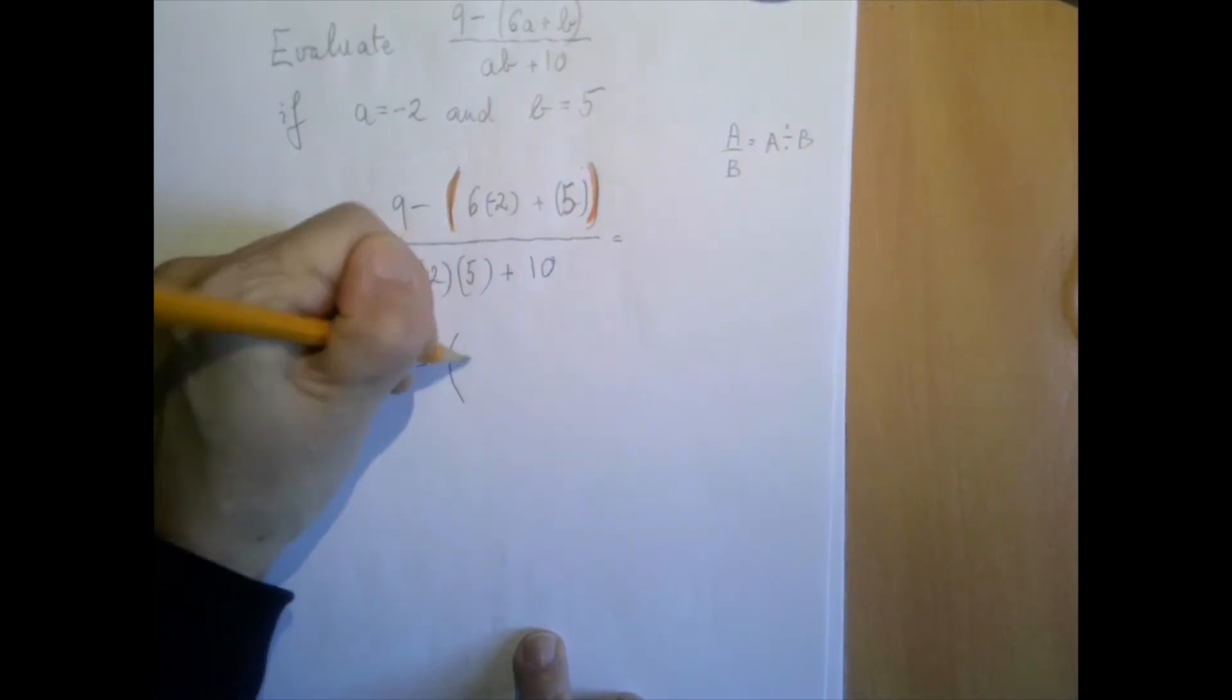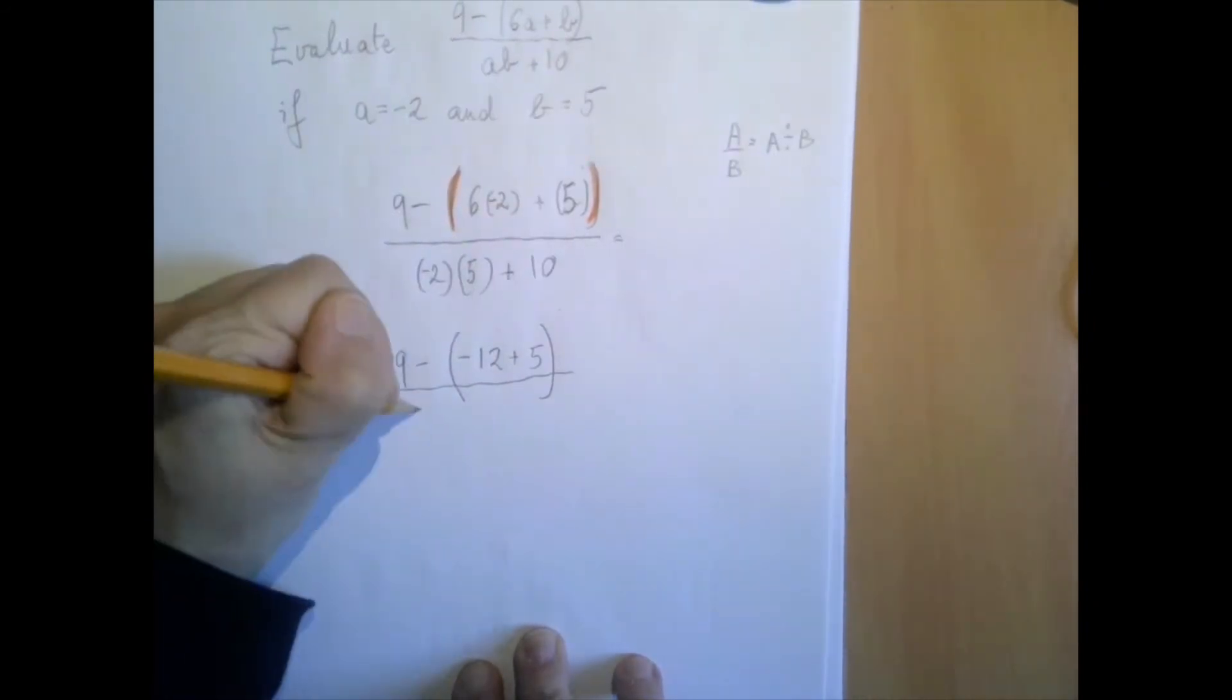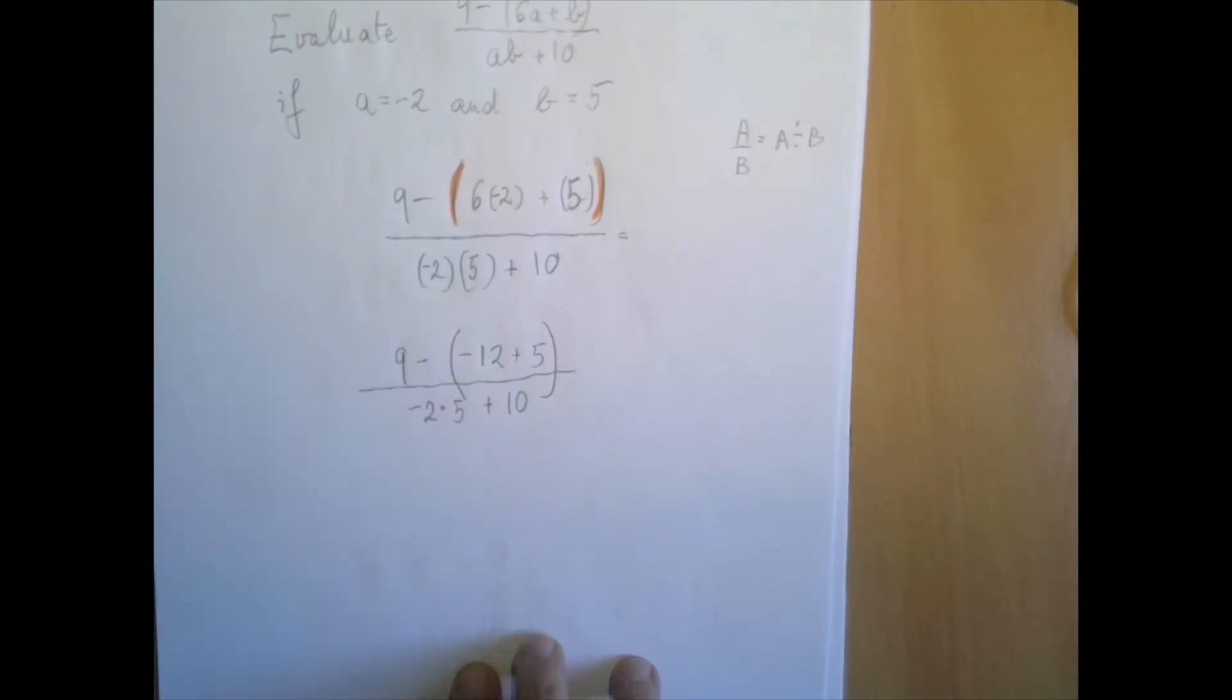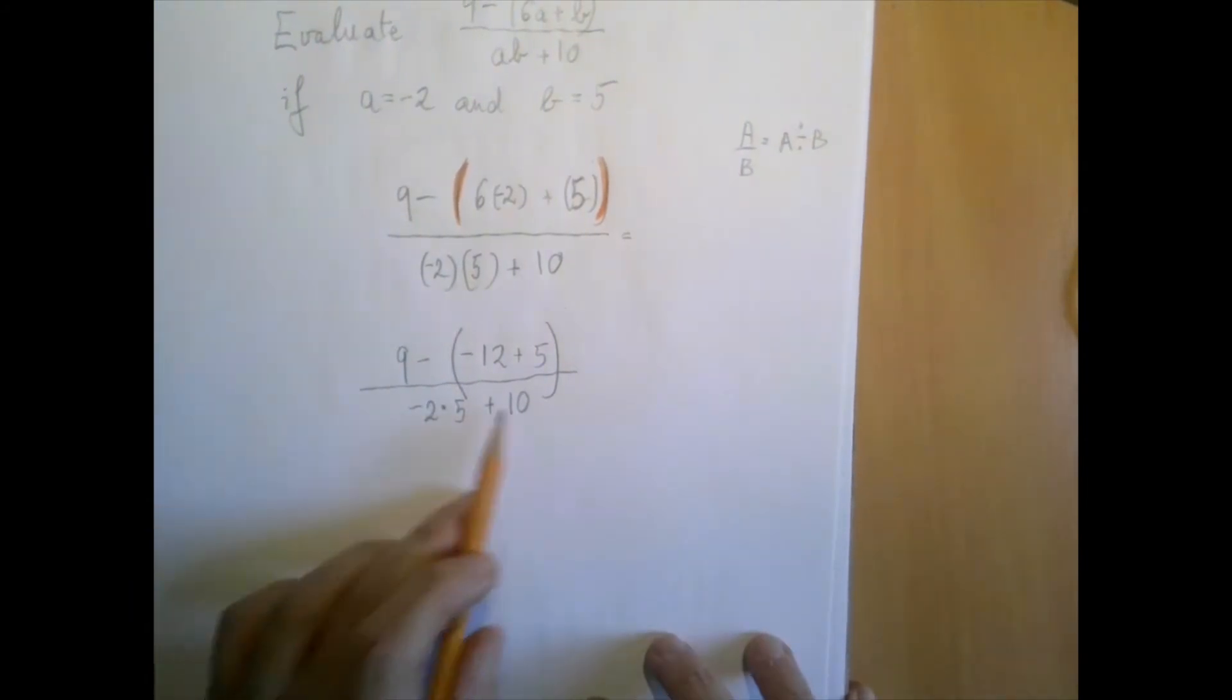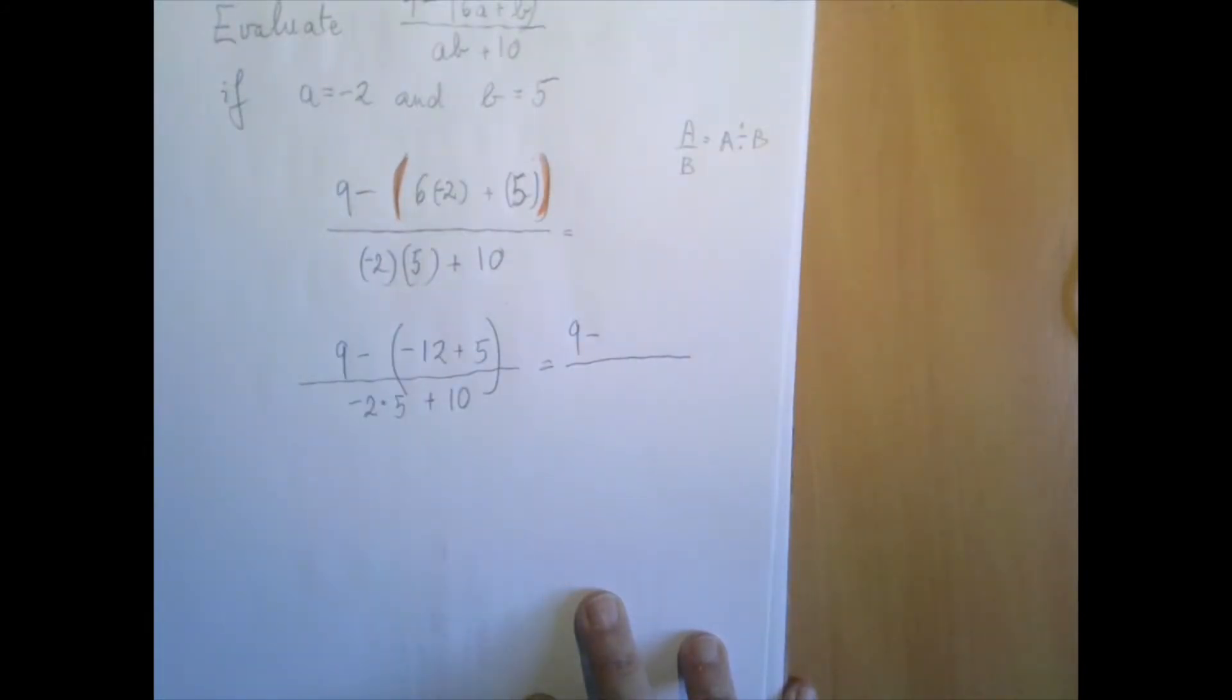6 times negative 2 is negative 12. We're just going to indicate the addition and carry the problem. We can simplify notation, so we can drop the extra parentheses. So now, we still have this grouping symbol. Negative 12 plus 5 is negative 7.